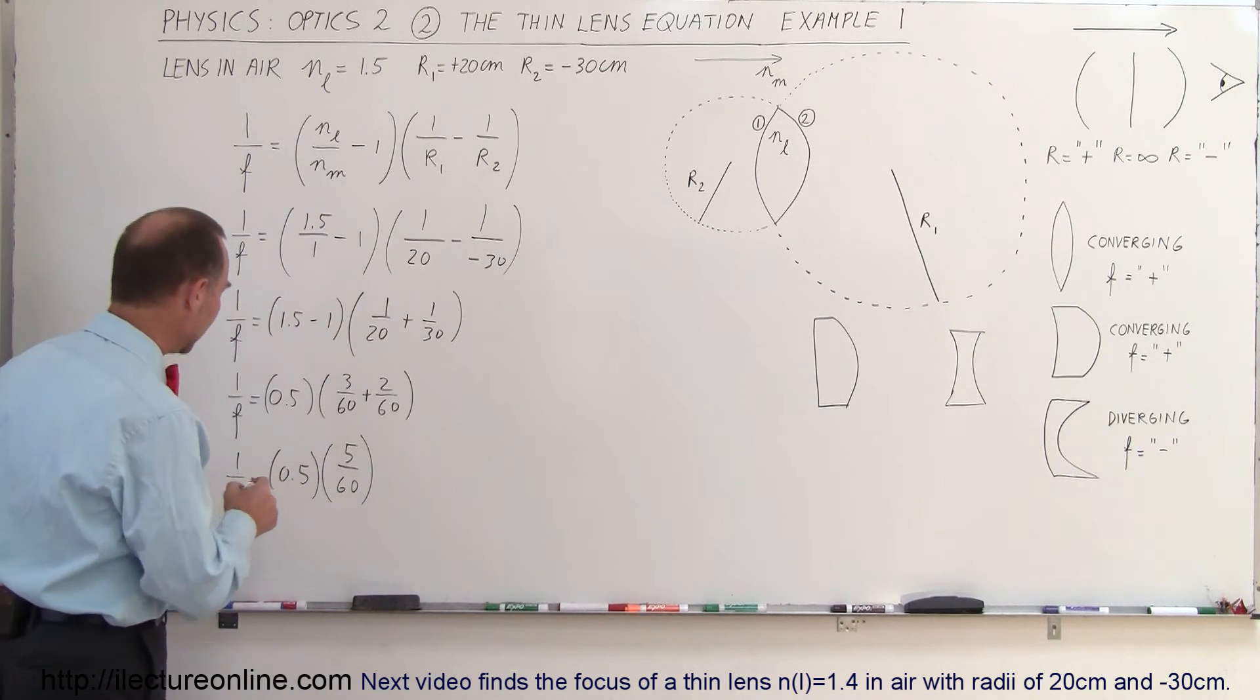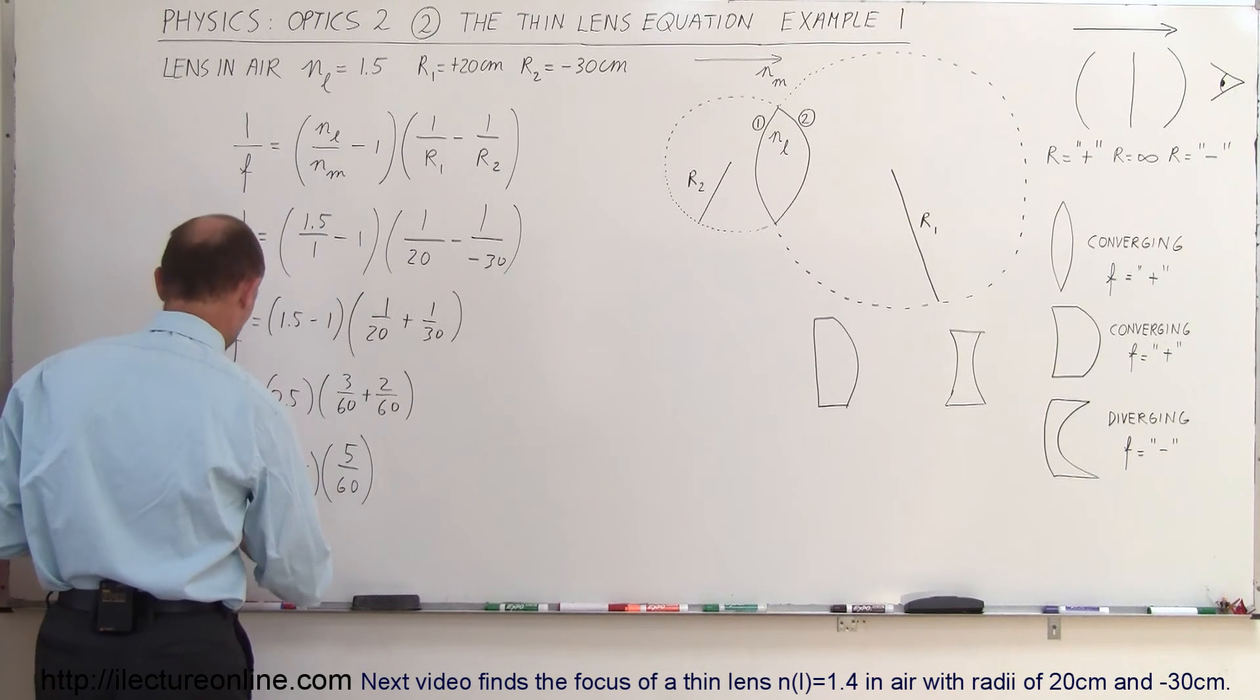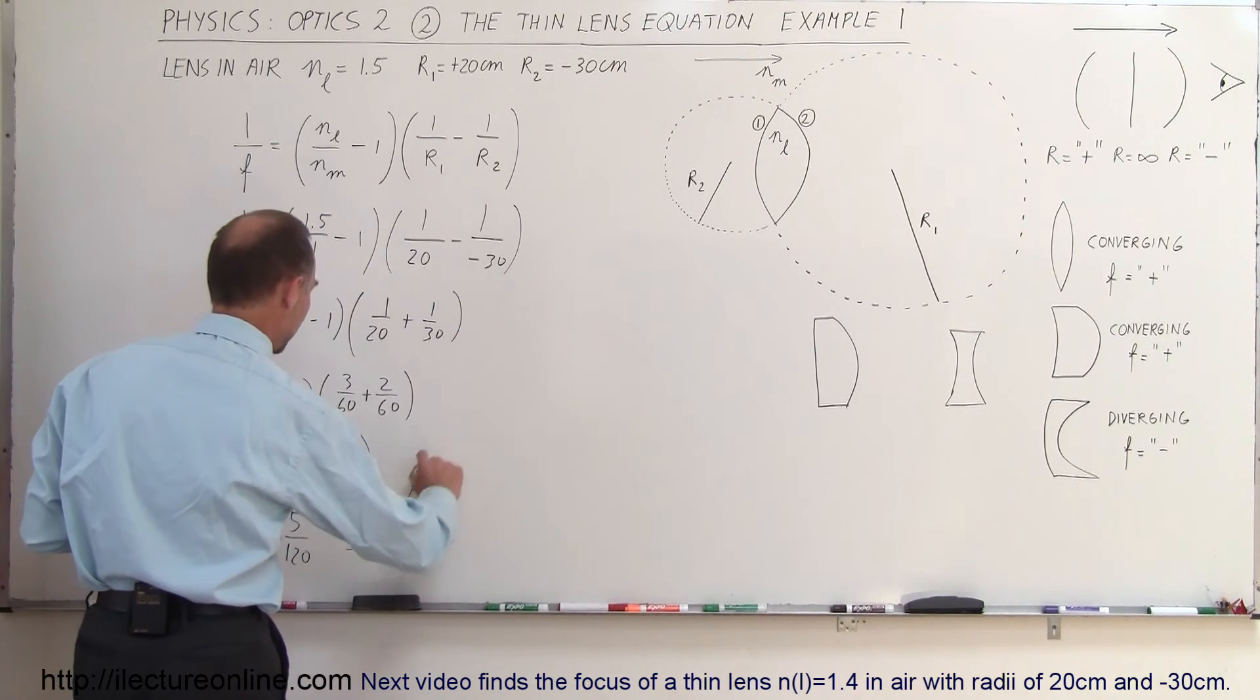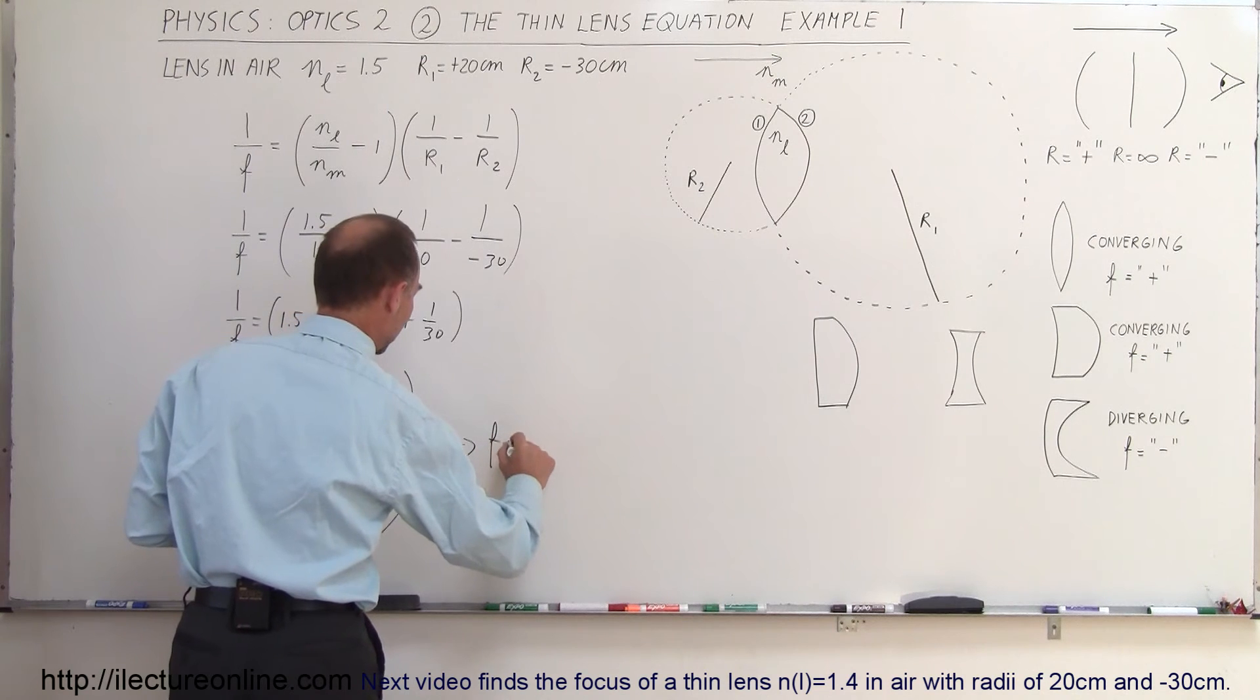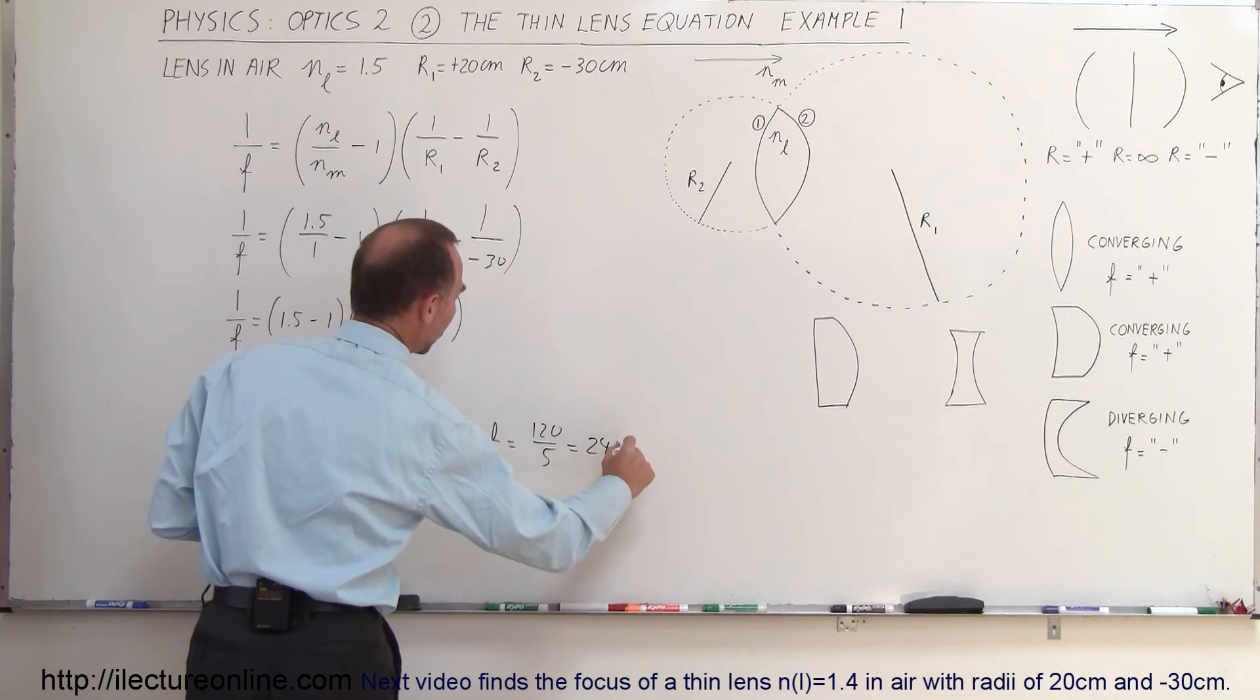And 0.5, if we multiply both the top and the bottom by 2, we get 1 over f is equal to 5 over 120. So that means that f is equal to 120 over 5, which is equal to 24 centimeters.